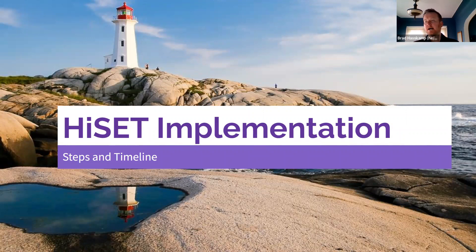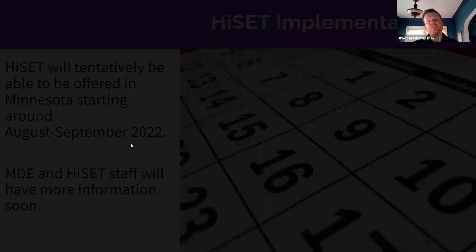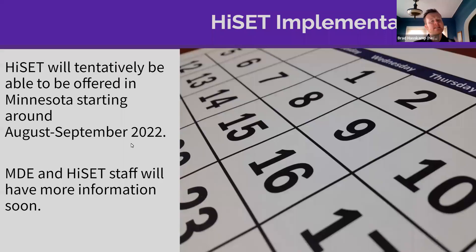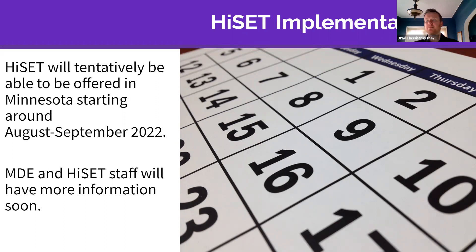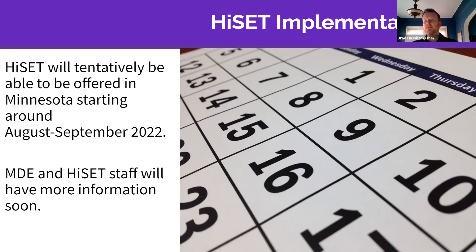Now let's move to HiSET implementation. We will tentatively be able to offer HiSET in Minnesota starting August or September. The reason for the uncertainty is that HiSET is transitioning from ETS over to PSI. They're piloting with one state — Montana — in May and June, and then bringing other states on afterwards as the pilot is ready and logistics are worked out. The HiSET team thinks we'll be able to launch in Minnesota under PSI in August or September, and we'll reach out with more information via email and webinars as the timeline becomes clearer.